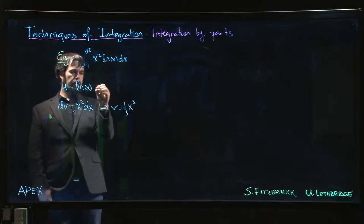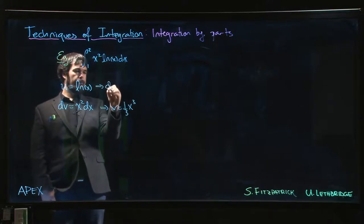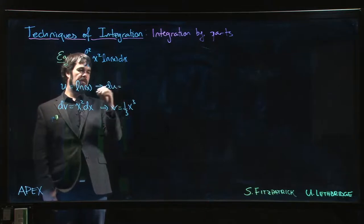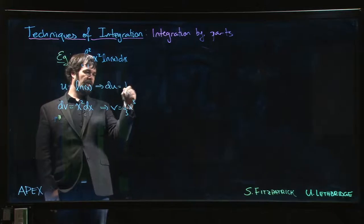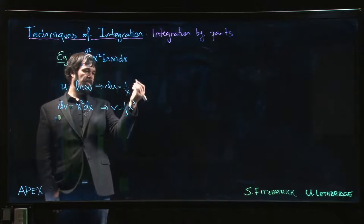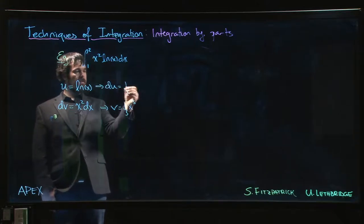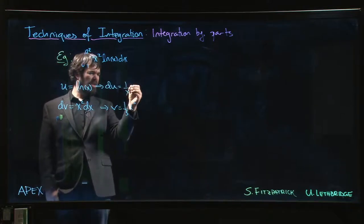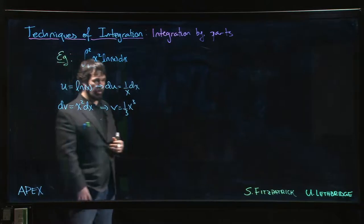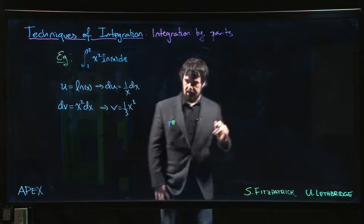But of course when we take the derivative of the natural log we get 1 over x, which is going to help reduce powers. And by taking the derivative of the natural log we get simply a power function—the log is gone. Logarithms are tricky beasts to deal with, so if we can make it go away we're probably happy.